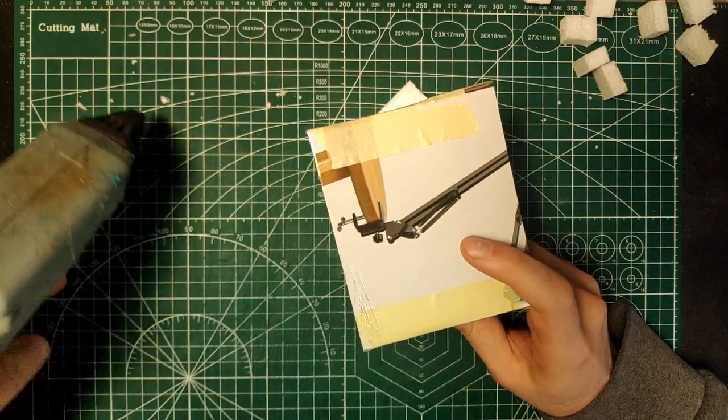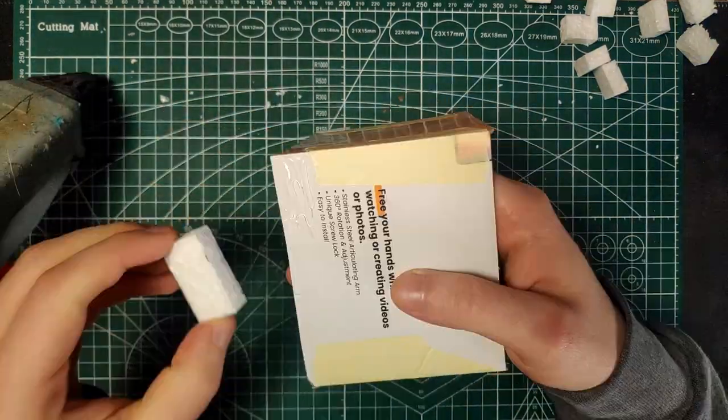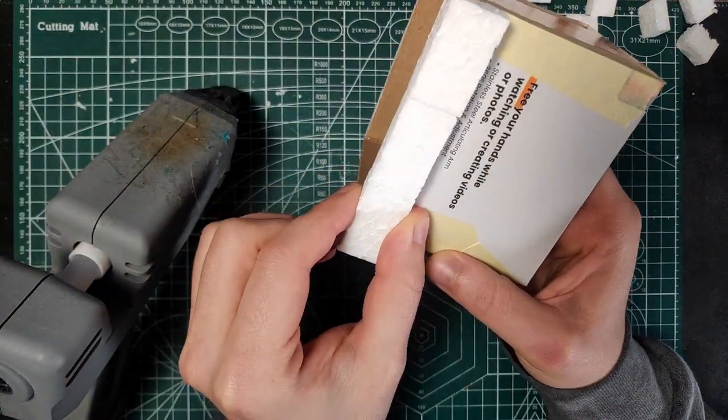Once we are done cutting all the pieces, we can glue them on the base structure. Remember to leave some space for the door.